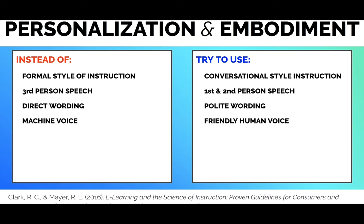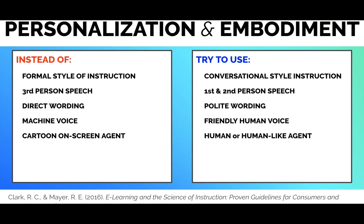Instead of using a machine voice, use a friendly human voice. This is really important when you have on-screen agents, because people are often compelled to use a machine voice if it's a machine doing the training. But studies have proven that is actually detrimental to your students' learning. When you have your on-screen agent, you want them to look more human or human-like — as opposed to a cartoon agent, you don't want to distract your students; you want to promote engagement. Even if the agent doesn't look entirely human-like, you don't want it to be a cartoon for entertainment value — you want it to be there for content value.